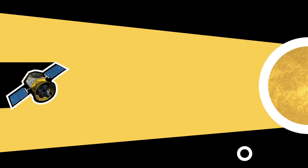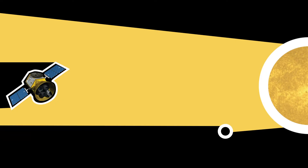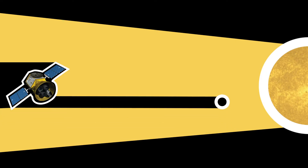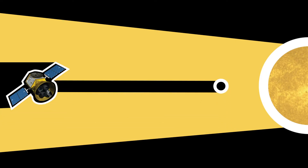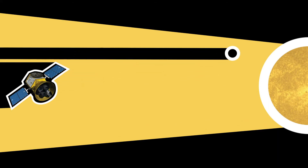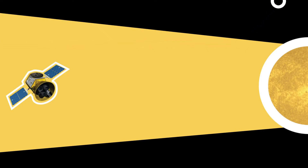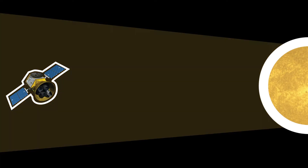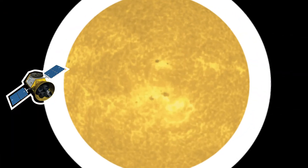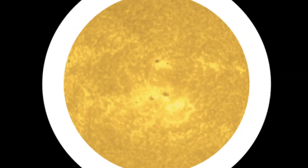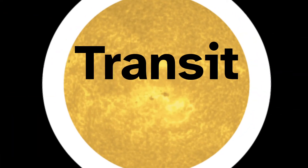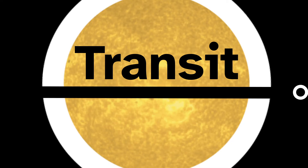Exoplanets are planets that orbit faraway stars. When a planet passes in front of its star, it blocks some of the light — usually only a very tiny amount, a few percent or less. When we sonify starlight and hear the dip in the amount of light reaching Earth, it might mean an exoplanet orbits that star. Using this dip in brightness to discover exoplanets is called the transit method, because we analyze the change in light as a planet transits in front of the star.